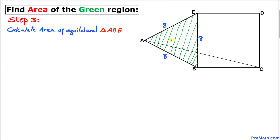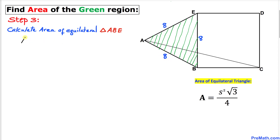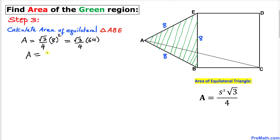Now let's calculate the area of equilateral triangle ABE. The formula is: Area = (S² × √3) / 4, where S is the side length. Substituting S = 8, we get (√3 / 4) × 64, which equals 16√3 square units.